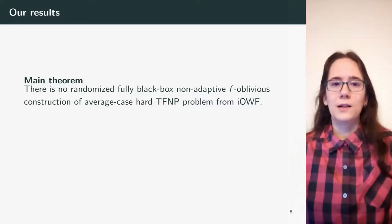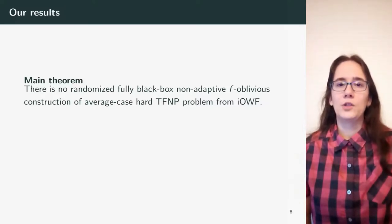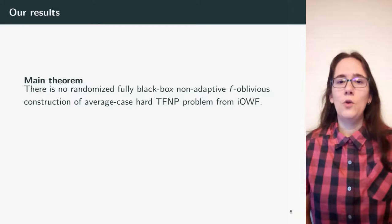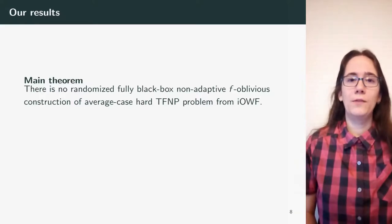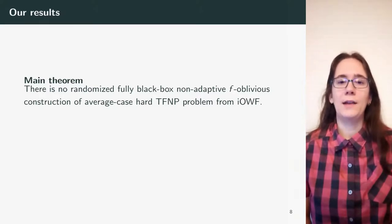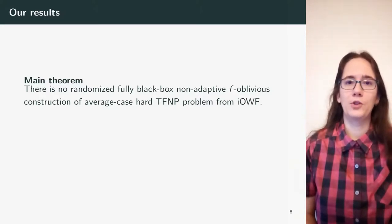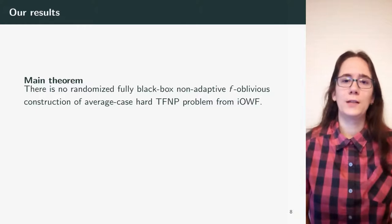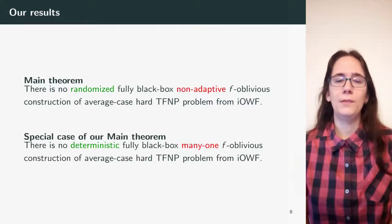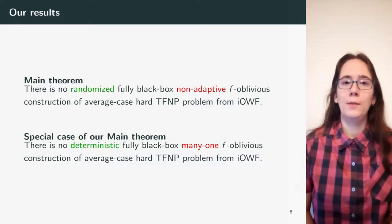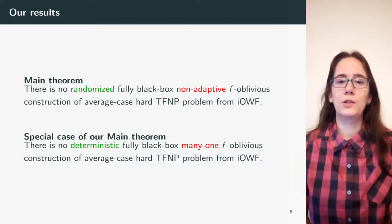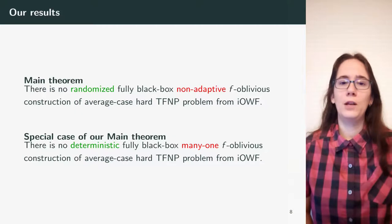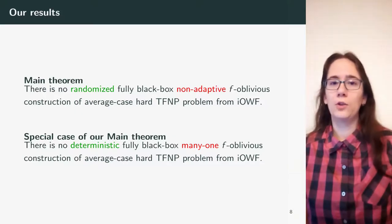Our main theorem is that there is no randomized, fully black-box, non-adaptive, F-oblivious construction of an average-case hard TFNP problem from an injective one-way function. Let me note that we can actually show this for a worst-case hard TFNP problem as well. A special case of our main theorem is that there is no deterministic, fully black-box, many-one, F-oblivious construction of average-case hard TFNP problem from injective one-way functions, and this is what I will be talking about.